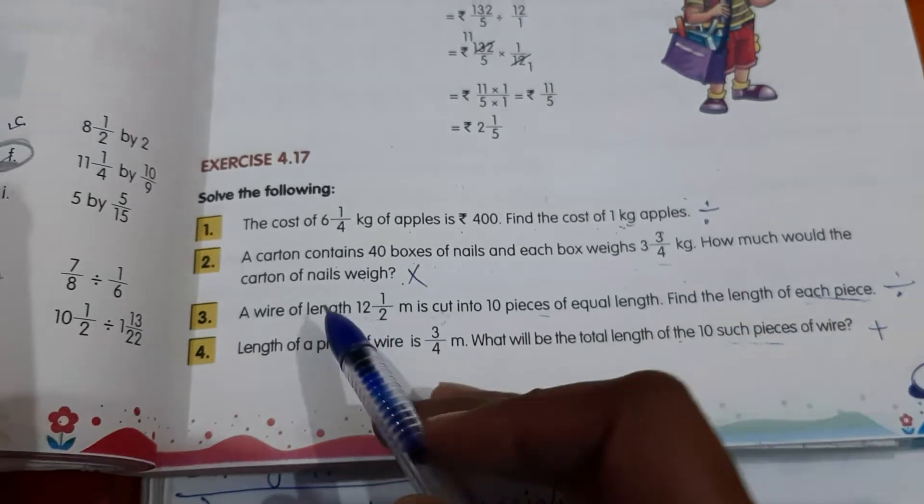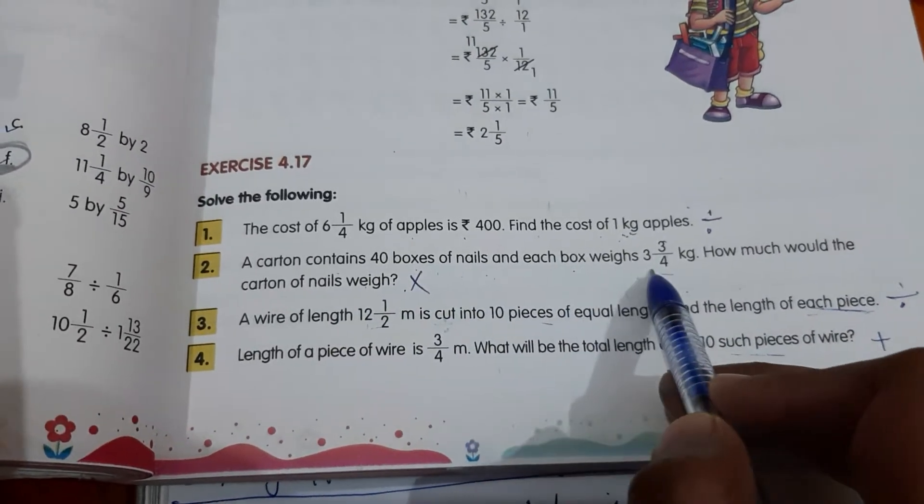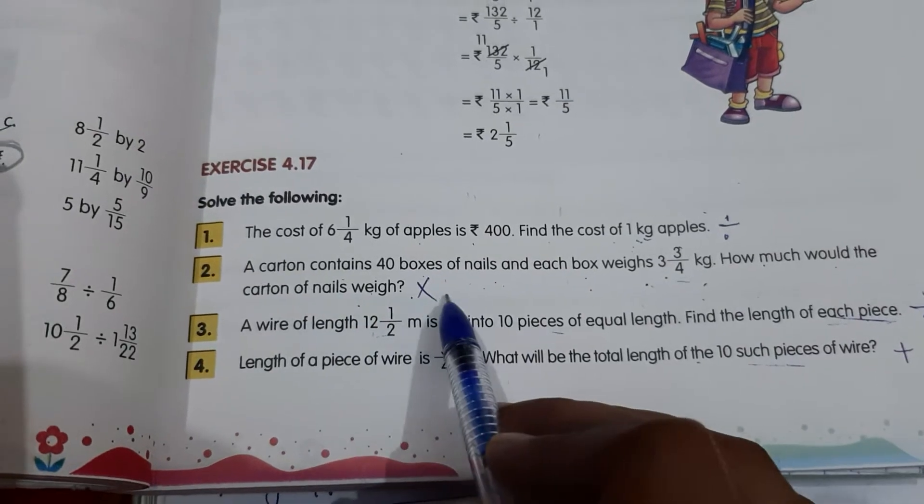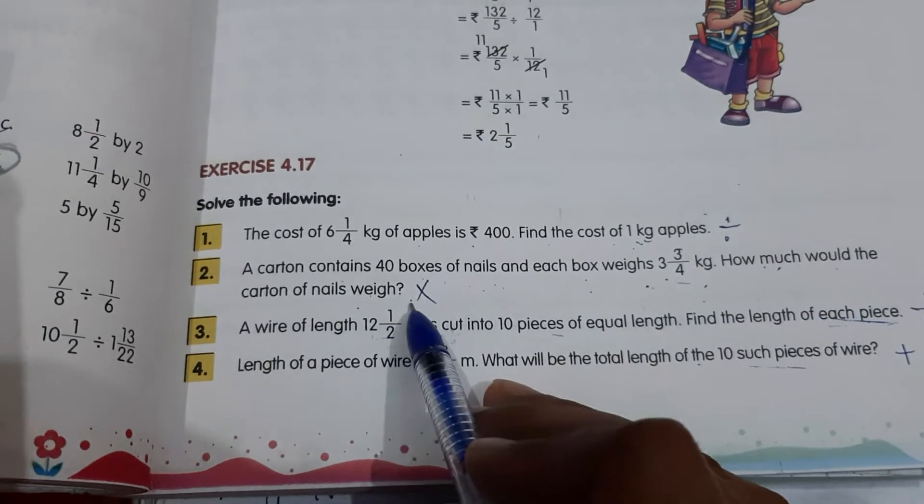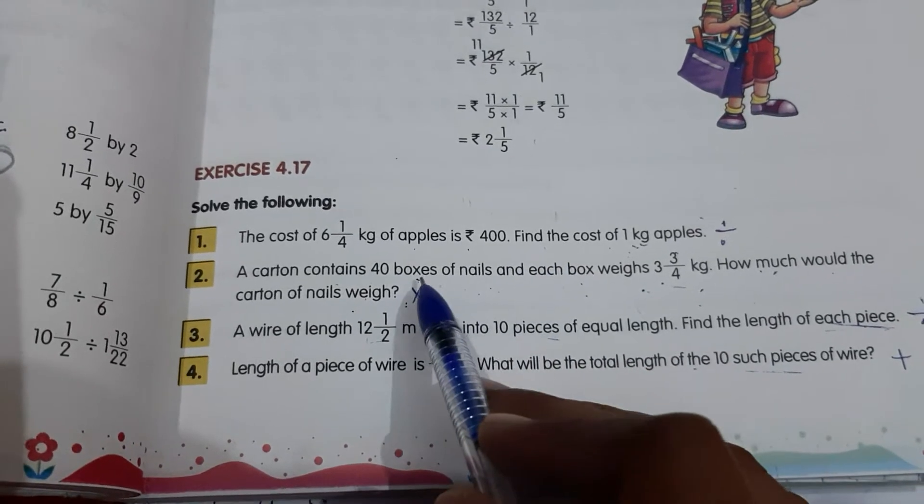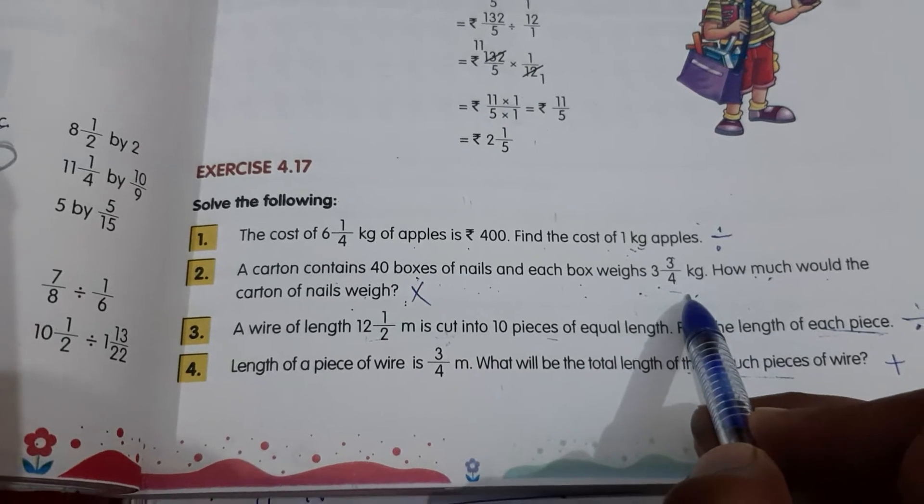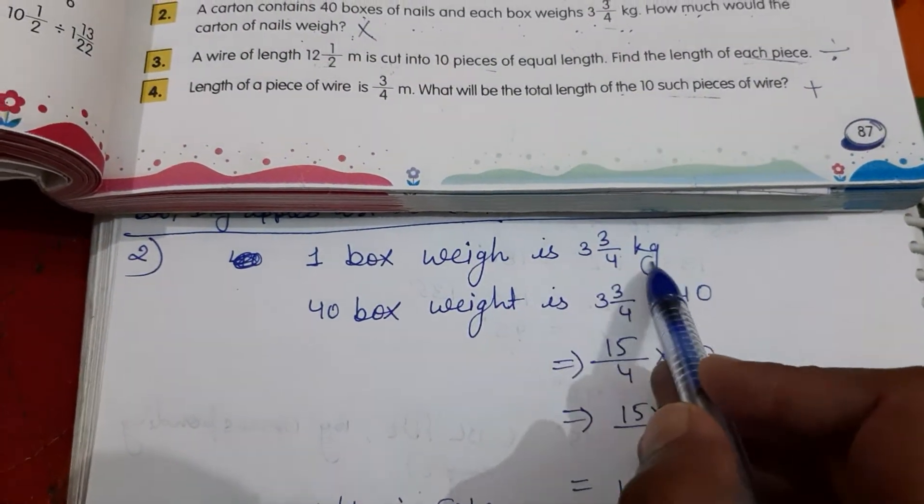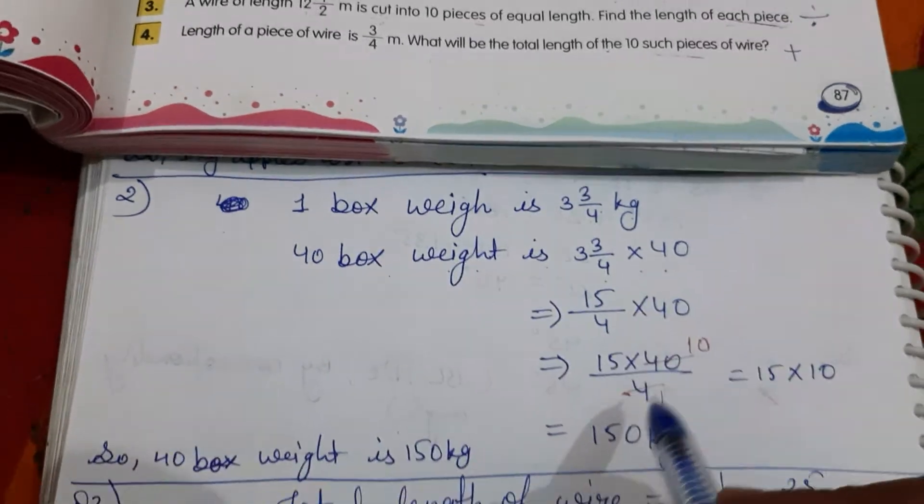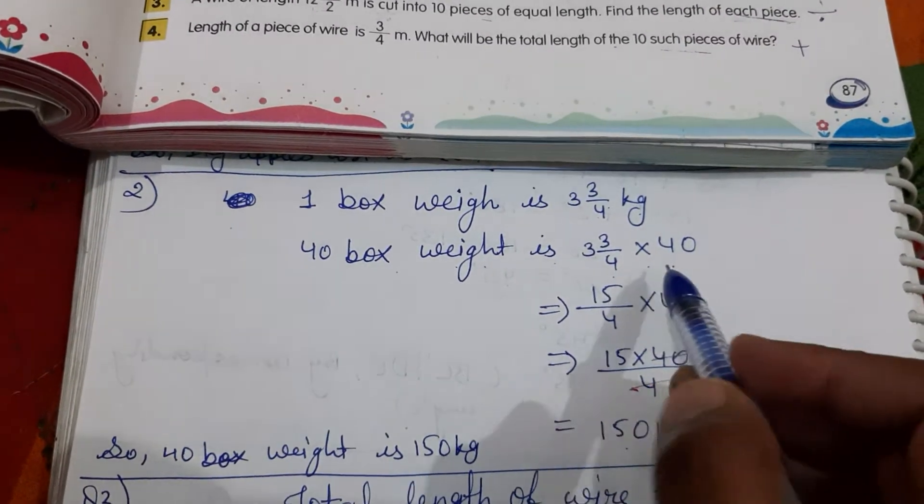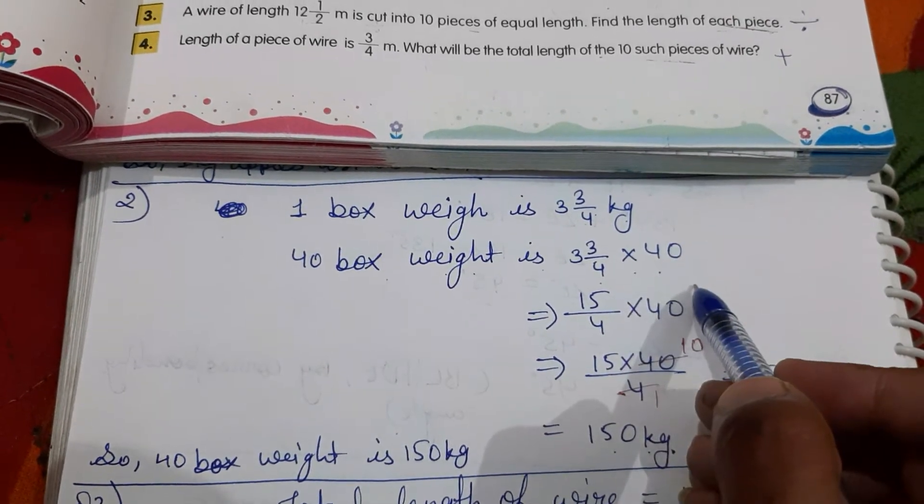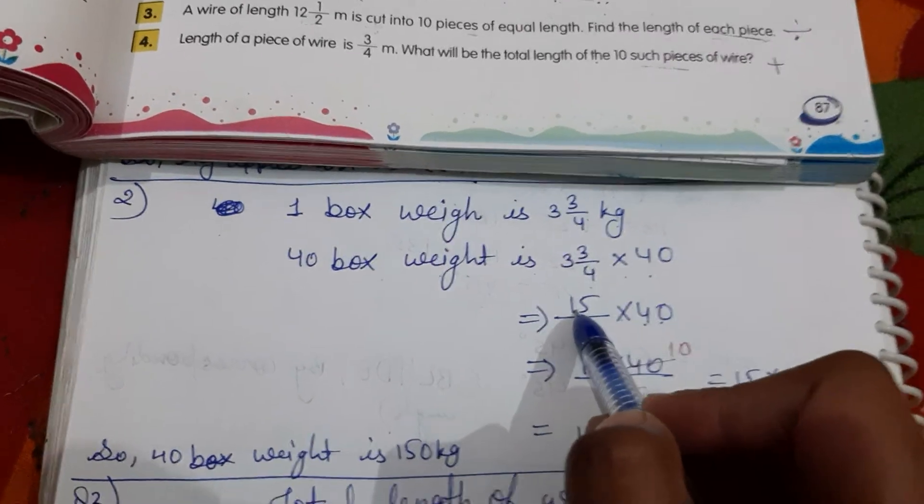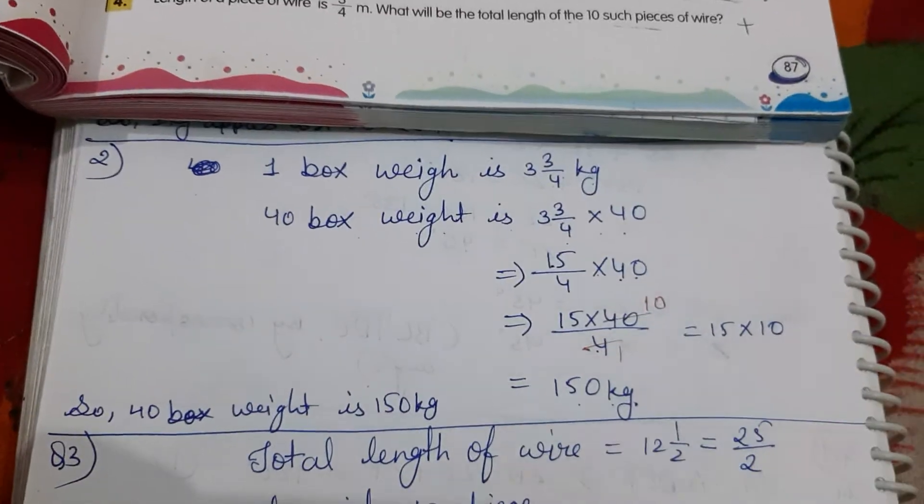Next question. A carton contains 40 boxes of nails and each box weight is 3 3 by 4 kg. Each box weight is given. And how much would the carton of nails weigh? So here we are asking total weight, cartoon ka total weight. So here we have to use multiply operation. One box weight is 3 3 by 4, so 40 boxes weight is 3 3 by 4 multiplied by 40. And you will get here 150 kg. After multiplication sign, no need to take LCM, directly you can do it. Multiply as it is. 40 in numerator multiply hua. So 15 into 40 upon 4, and you will get here 150 kg.